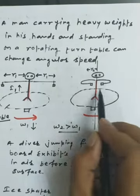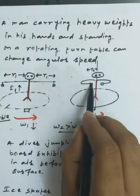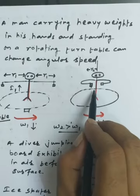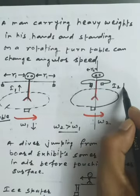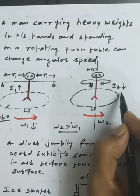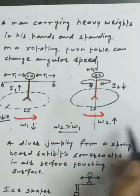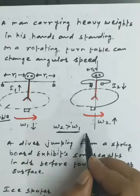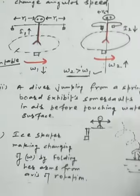When he brings his hands — which are holding the weights — closer to the axis of rotation, the moment of inertia becomes I₂, which is smaller, since moment of inertia depends on the distance of mass from the axis of rotation. At this time ω₂ will have a greater value. So to conserve angular momentum, ω₂ is greater than ω₁ in this case.